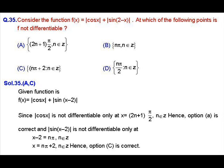Solution of question number 35: we have f(x) equal to mod of cos x plus mod of sin(2 minus x), and we have to find the points where f is not differentiable. To find such points we can use algebra of differentiability. We know if f and g are differentiable at some point then f plus g is also differentiable at that point, and if f is not differentiable at some point but g is differentiable at that point then f plus g is not differentiable at that point.